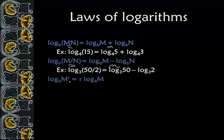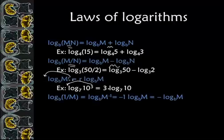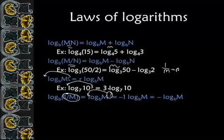Whenever we have an exponent we actually pull it out front. An example would be log base 7 of 10 to the third is 3 times log base 7 of 10 — we pulled it out front. And then finally, log base b of 1 over m is the same thing as log base b of m to the negative 1, which equals negative 1 times log base b of m, because this negative 1 pops out front. Since 1 over m is the same thing as m to the negative 1, that's how we get this result, or just negative log base b of m.